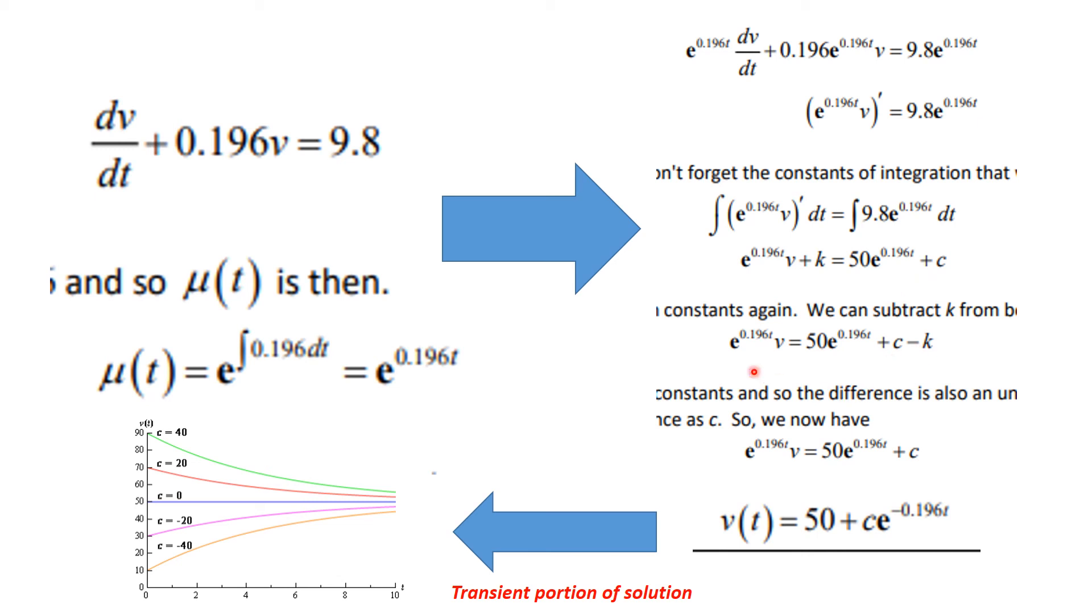And so, what we have is we really want to know what v is. So, we're going to divide by e to the 0.196t. And I'm playing fast and loose with the constants now. I'm saying, this constant over here that was c minus k is just going to be called c. So, I will divide all the way through by e to the 0.196t, and I'll get v of t is equal to this.